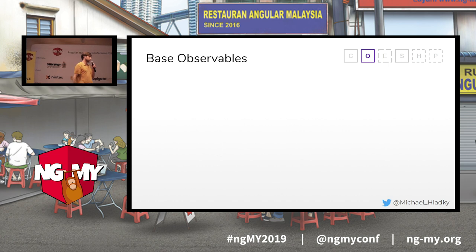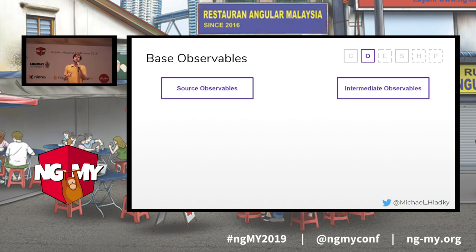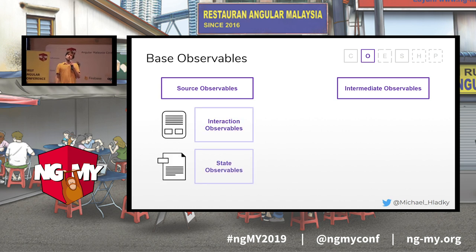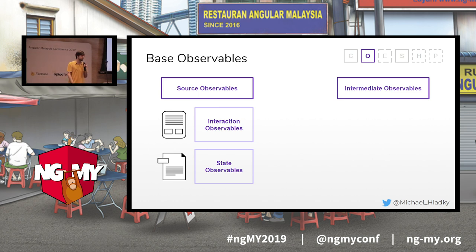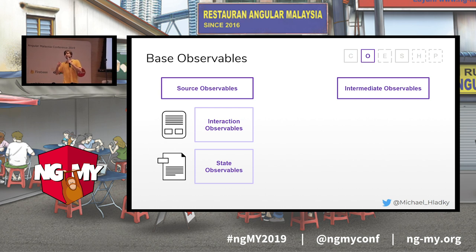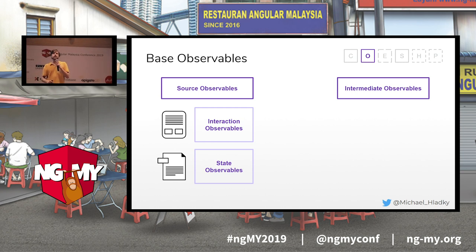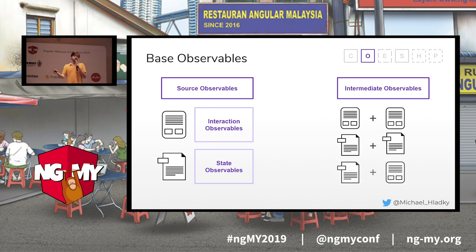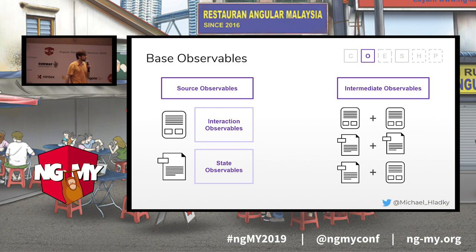The second thing: we have base observables, subdivided into two groups — source observables and intermediate observables. Source observables are divided into interaction observables, which are buttons or other user interface elements, and state observables, which provide me with some state that I want to observe. Intermediate observables are a mixture of my source observables — could be a combination of two user input elements, two state observables, or a combination of one state and one or multiple user input elements.